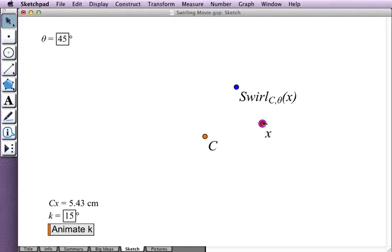So this is a nice rotation by 45 degrees, but my next step is going to be to edit theta to use the distance between C and X to control the amount of rotation.